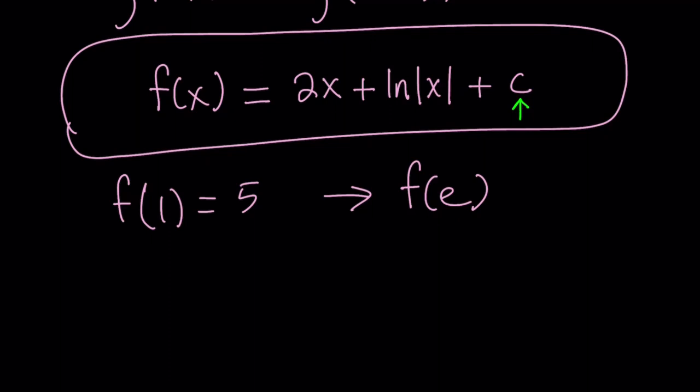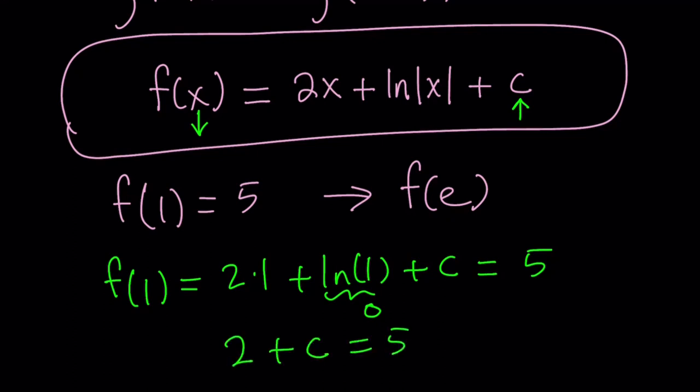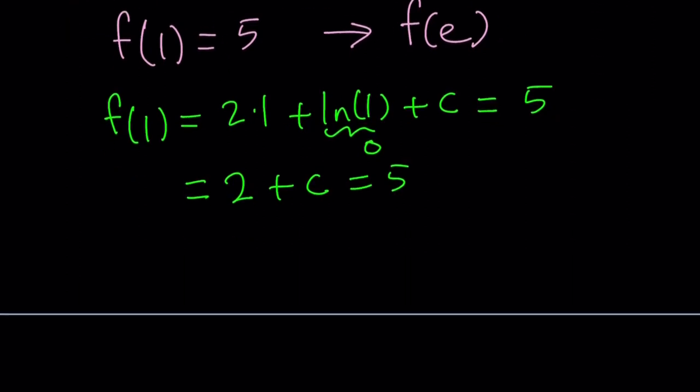c is a general constant, but in this particular case for x equals 1, it is going to have a definite value. So let's replace x with 1 in f of x. f of 1 becomes 2 times 1 plus ln absolute value of 1, which is ln 1 plus c. ln 1 is equal to 0 by definition of natural log. And f of 1 is given as 5, so we get 2 plus c equals 5. From here we get c equals 3. Awesome.